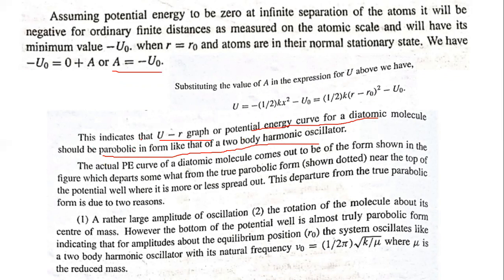The potential energy curve of a diatomic molecule, as shown in the figure, departs from the parabolic form near the top of the potential energy well. This departure from the true parabolic form is due to two reasons.